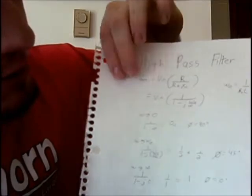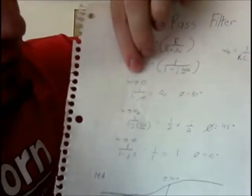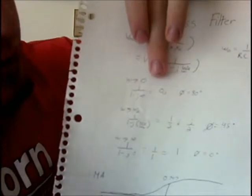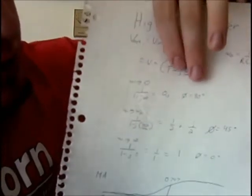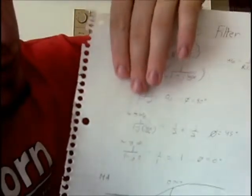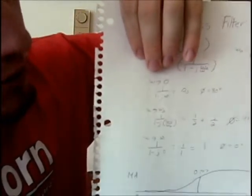And then we're going to use different omegas to see what results we get. So first we'll start with omega approaching zero and we get zero j which gives us a phase of 90 degrees. And then next we'll go to omega approaching omega naught which we simply get one half plus one half j which results in a phase of 45 degrees.